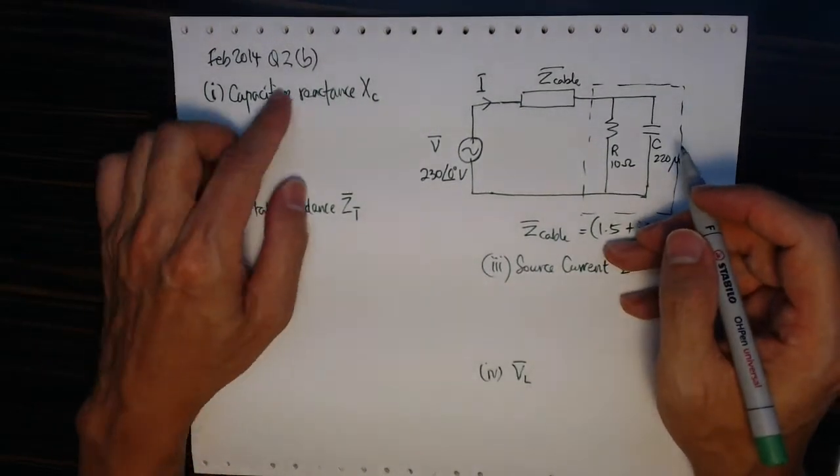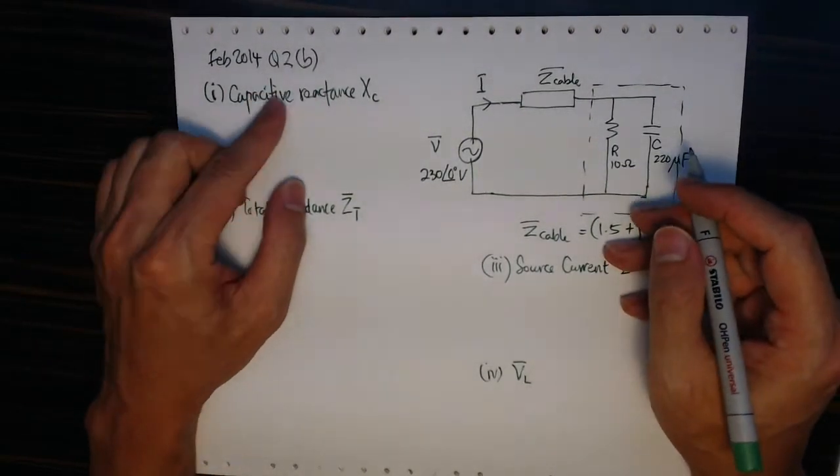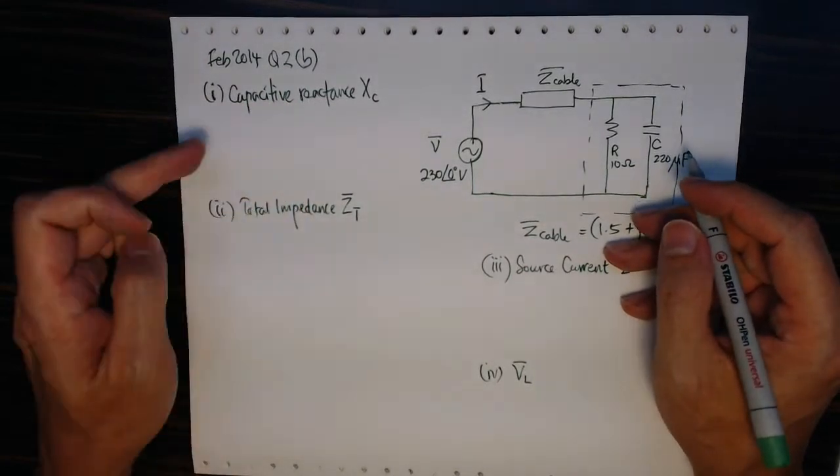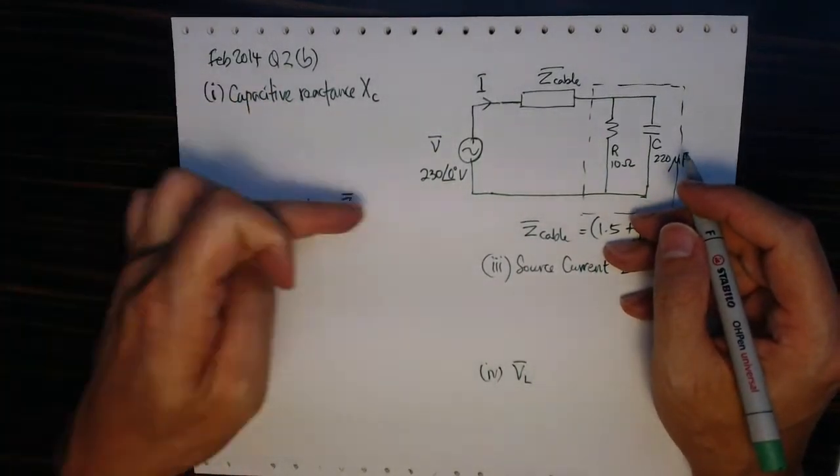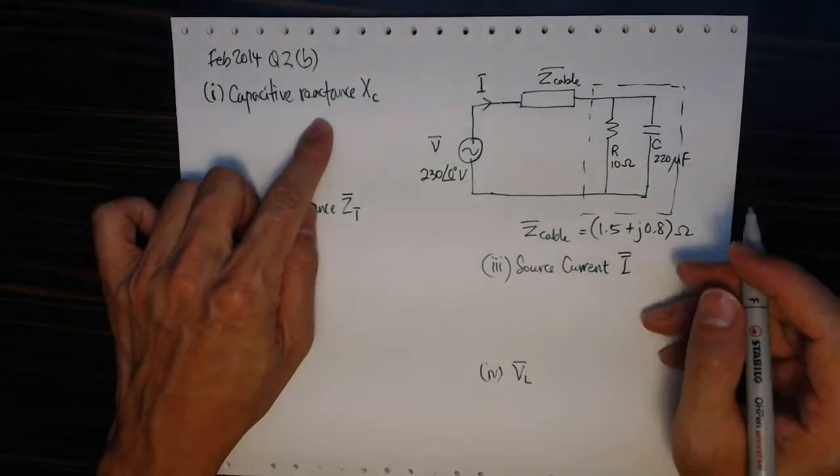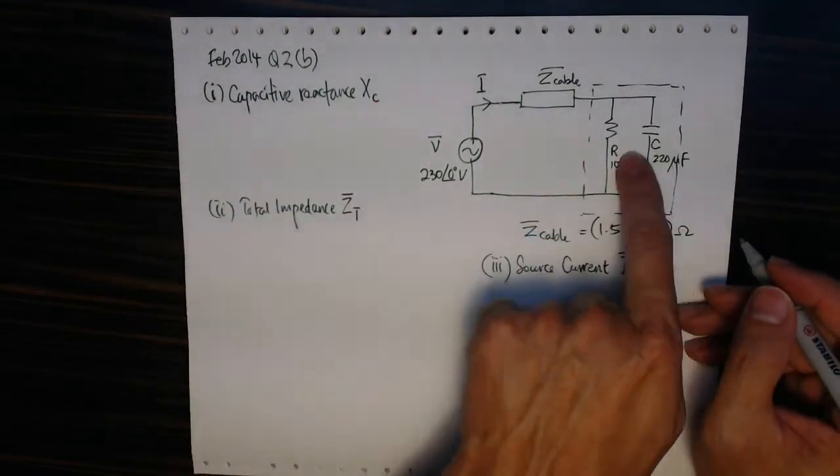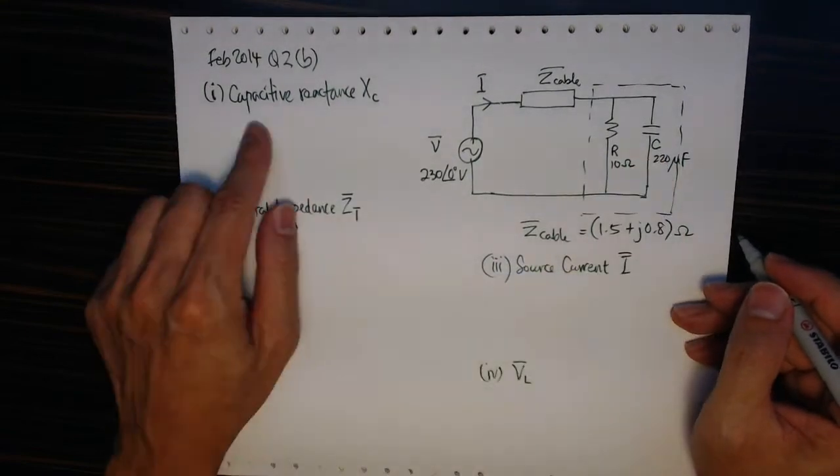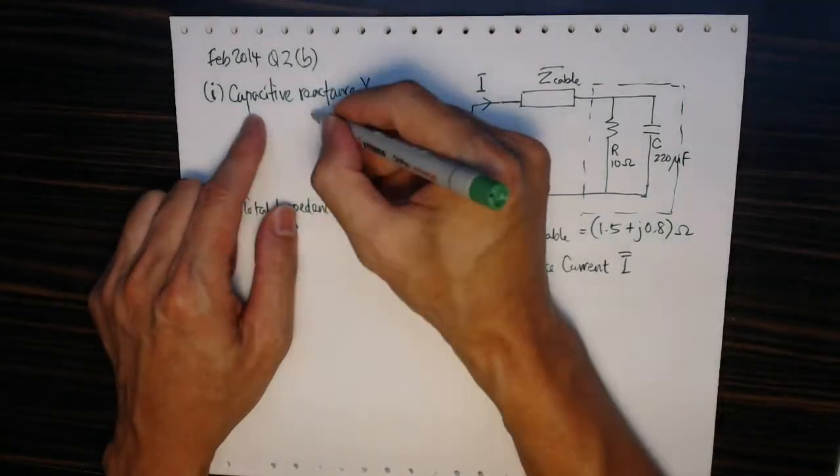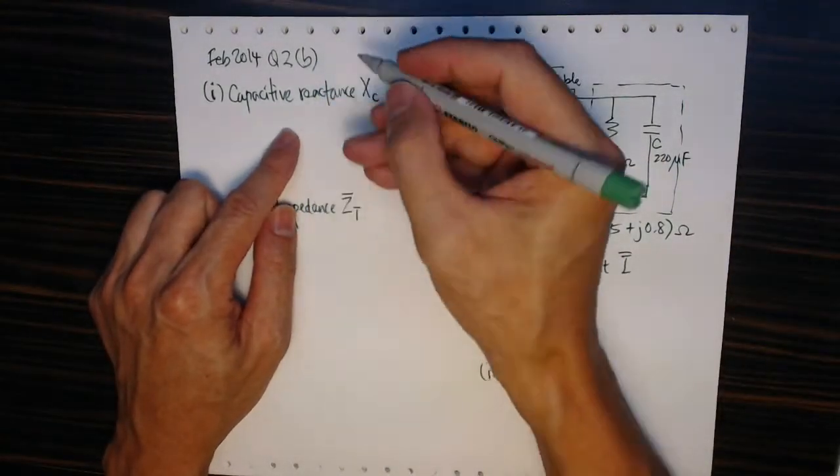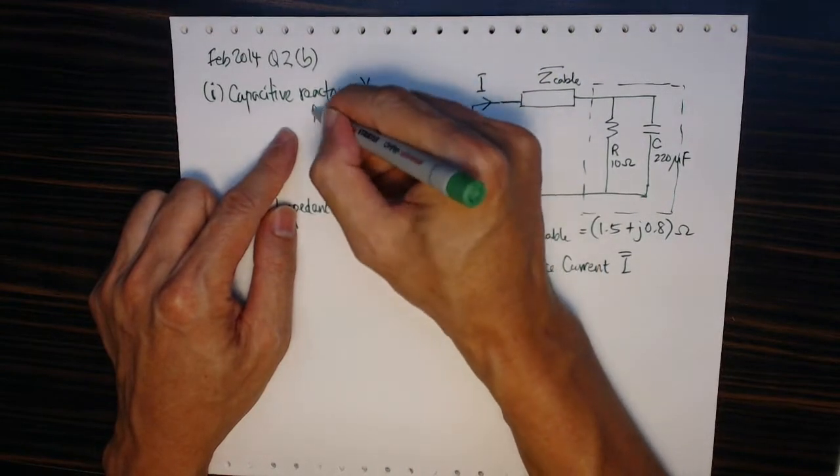Alright, for part B of question 2, the question is broken into four parts. The first one wants me to calculate the capacitive reactance Xc. In this question we are told that the input voltage frequency is 50 hertz.